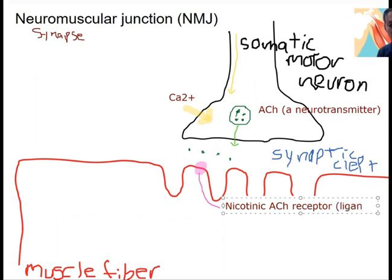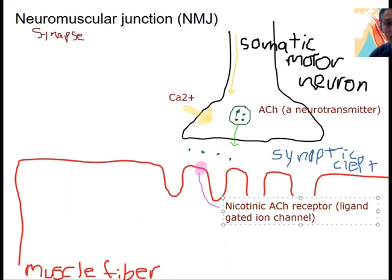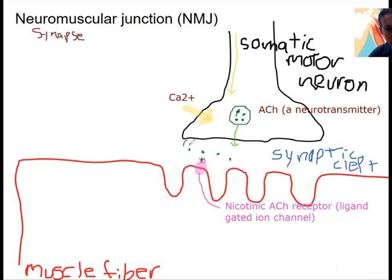This is a ligand-gated ion channel. The ligand that binds it is acetylcholine. There's a binding site for acetylcholine. When acetylcholine binds, it opens up that ion channel — that's what an ion channel does, it opens and allows things to flow down their concentration gradients. In this case, this ion channel allows sodium in, primarily.